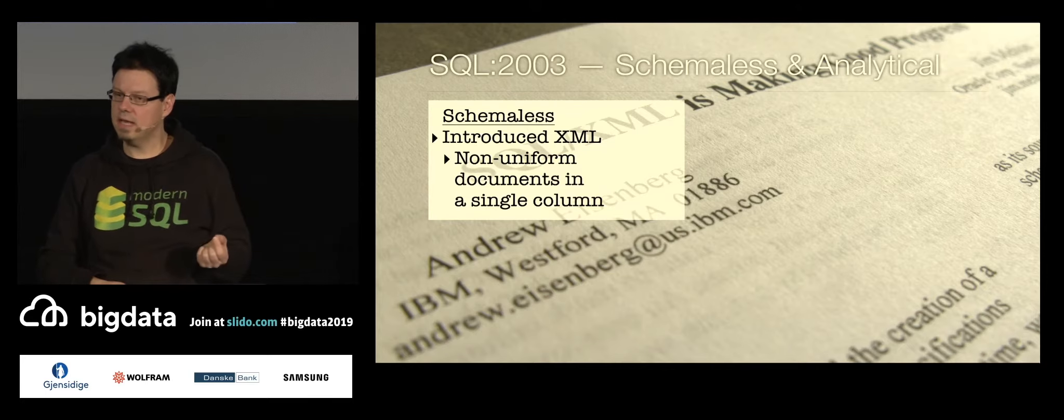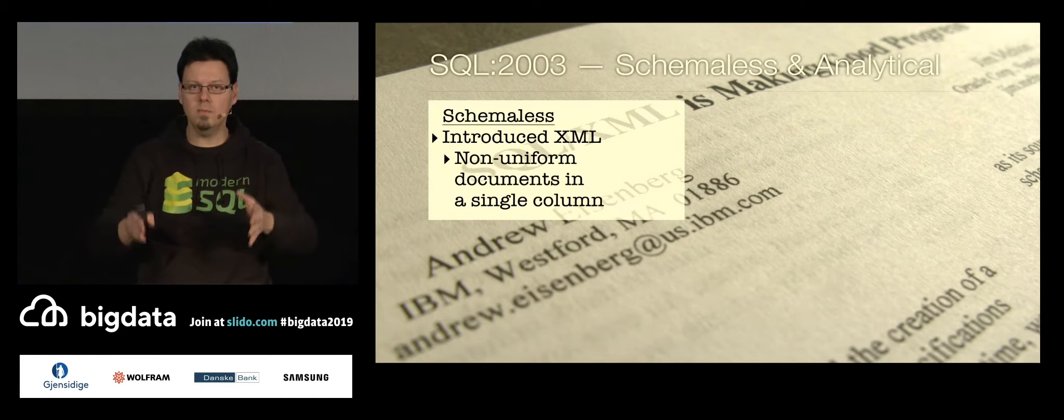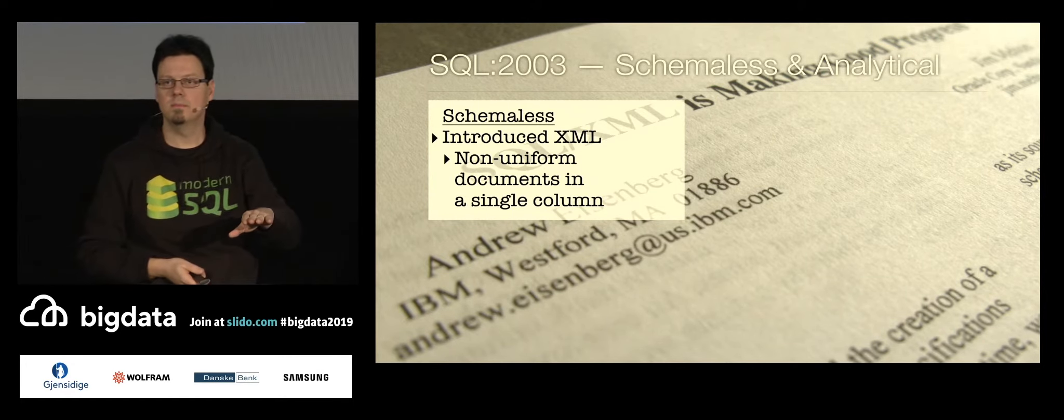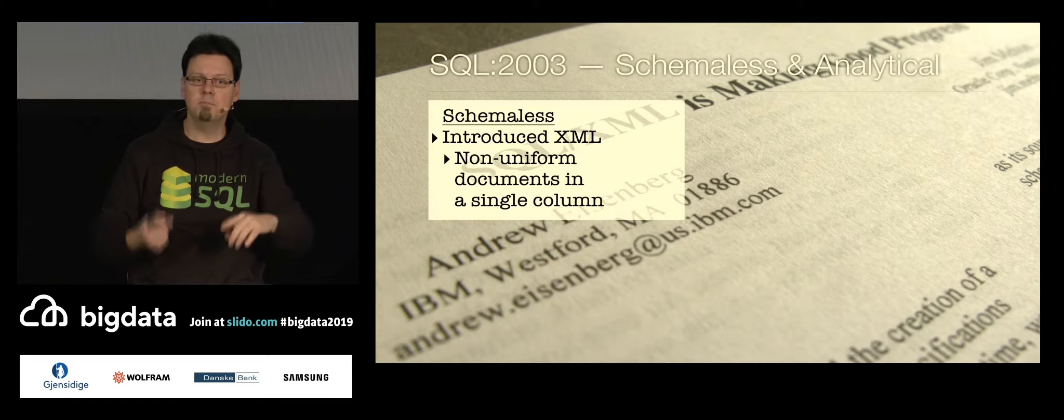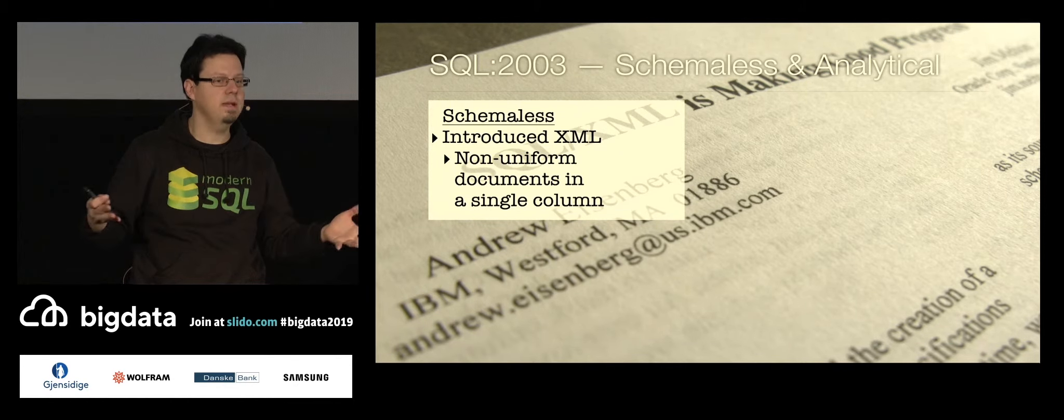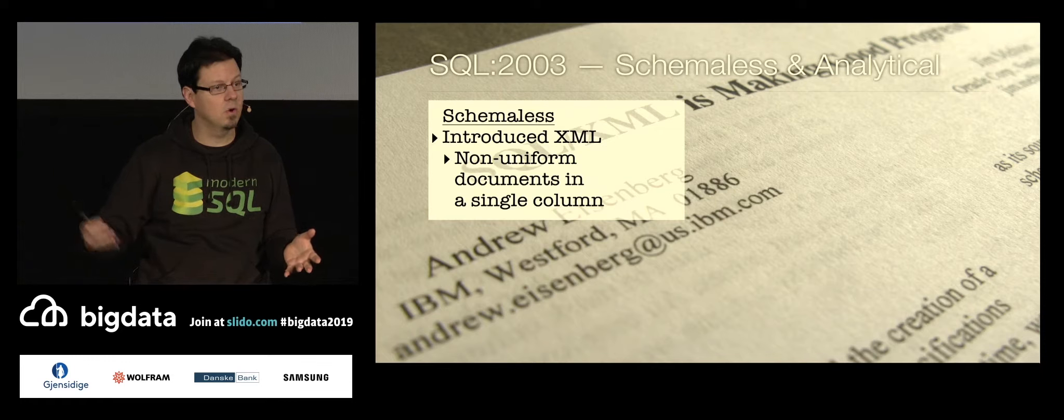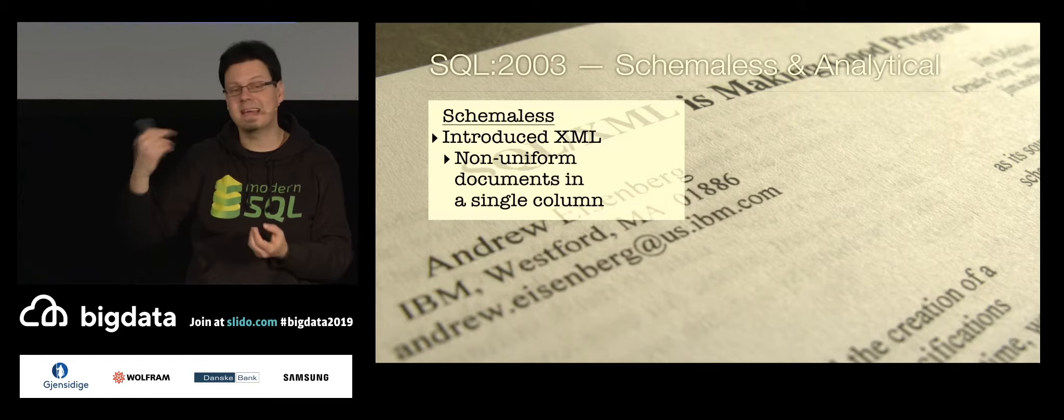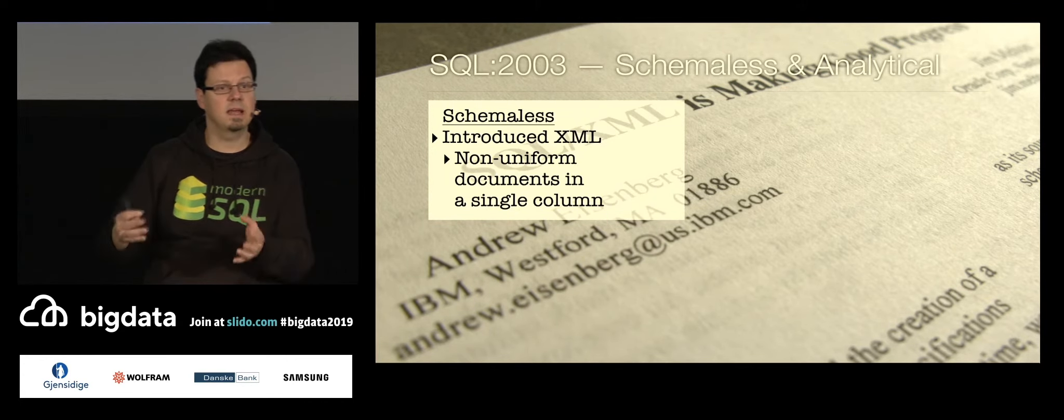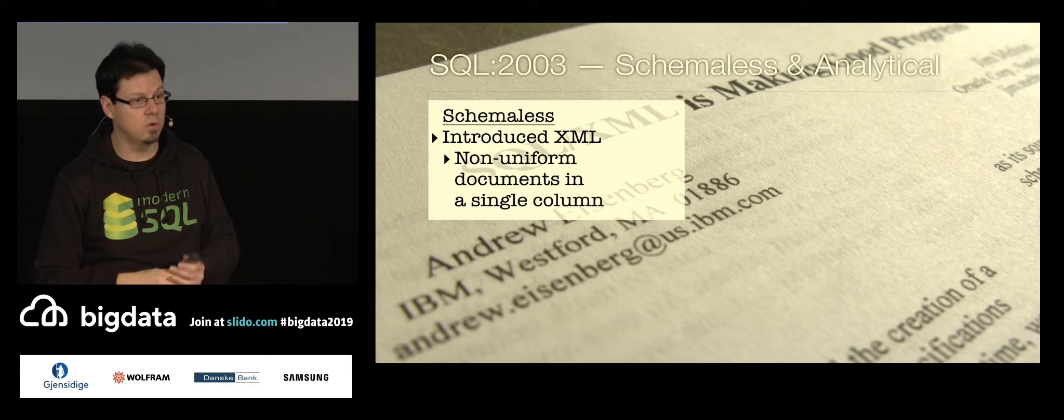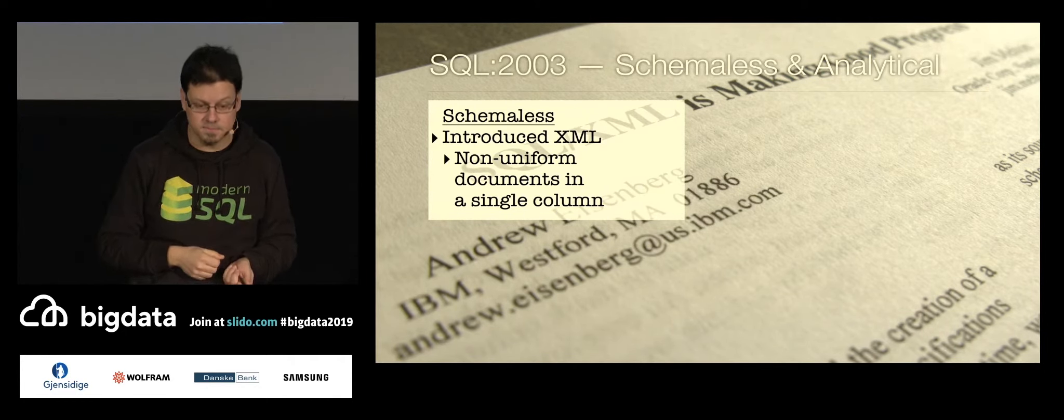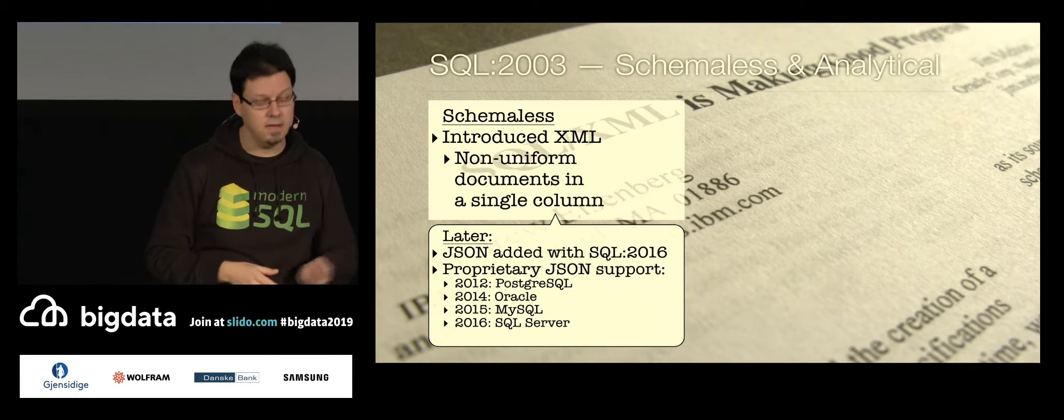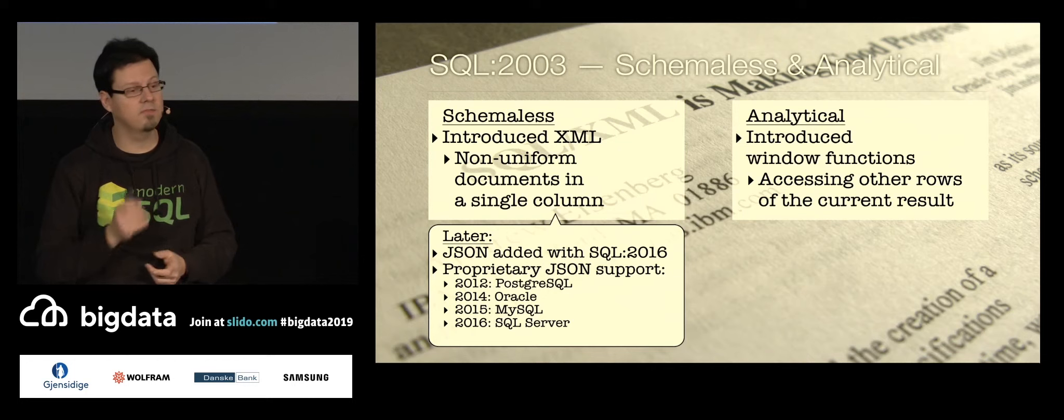The breaking change there was that we could now have a single column where the structure of the contents is different in every single row. That was the breaking change. Before, we just had a single column, let's say, of arrays, and array of the same type, or of a monetary type. So the same type in every row. Here we still have the same type, but the type is XML, which is flexible. So we can have something completely different in every row. So this was the breaking change at that time. In the meanwhile, of course, we have JSON support. Therefore, I will tell you something about JSON later on. And on the transformation side, we have got what is called window functions.